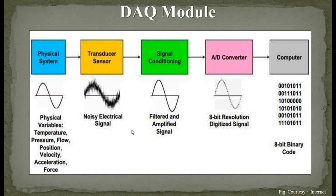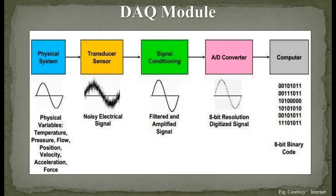From a thermocouple, we get only a few millivolts of voltage generated, which cannot be measured easily, so we need to amplify it to a few volts so the system can understand the signal. Amplifiers are used for augmenting that signal. That analog signal is then given to an A-to-D converter so it can be converted into binary digital data. After the A-to-D converter, an 8-bit resolution digitized binary signal is available as output — this is the complete data acquisition module process.